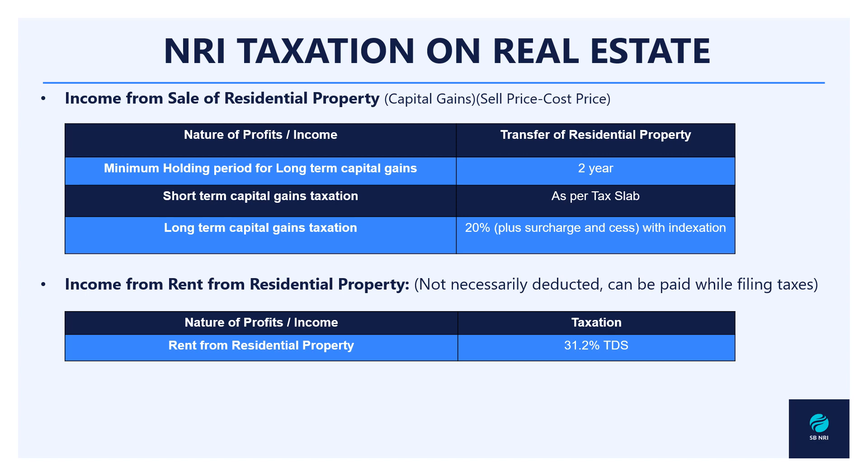The long-term capital gains holding period for property is defined as two years. If you buy a property and sell it before two years, you will have to pay short-term capital gains tax. If you sell after two years, taxation is charged on long-term capital gains. Short-term capital gain tax is directly linked to your individual tax slab. For long-term capital gains, tax is levied at 20% along with surcharges, but with the benefit of indexation.